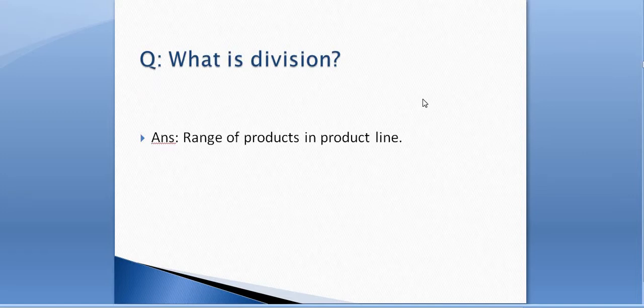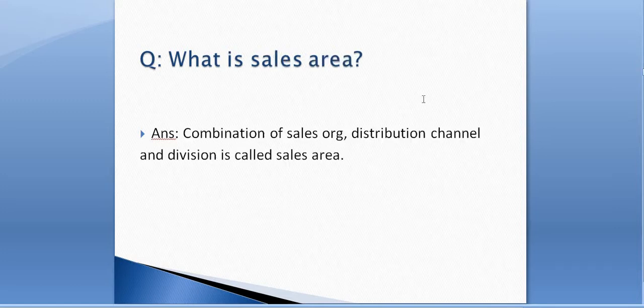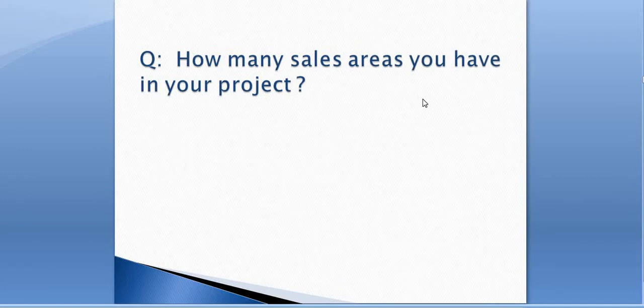What is a division? Division specifies the range of products in a product line. What is a sales area? A sales area is a combination of sales organization, distribution channel, and division. The interviewer may also ask how many sales areas you have in your project — the same way as sales line — so be prepared and have a number ready.